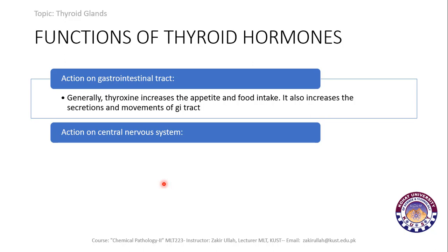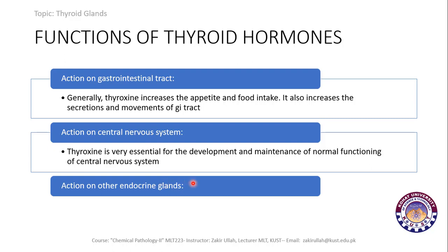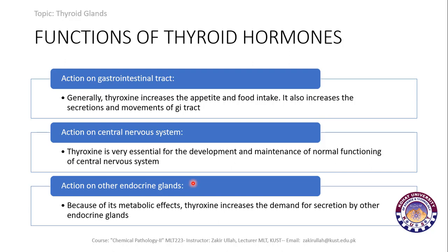On the central nervous system: thyroxine is important for the essential development and maintenance of normal functioning of the CNS. On other endocrine glands: because thyroid hormones increase the basal metabolic rate, thyroxine increases the demand for secretion by other endocrine glands.